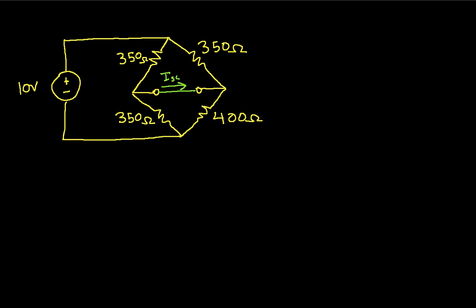Well, how am I going to do that? It turns out that there's a couple of things we could do. If I knew the current going through this 350 ohm resistor, let's call that I1. And if I knew the current going through this 400 ohm resistor, let's call that I2, then I could apply Kirchhoff's current law to this point. And I would have I1 plus ISC is equal to I2.